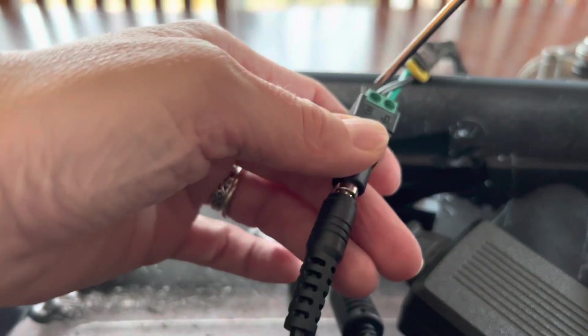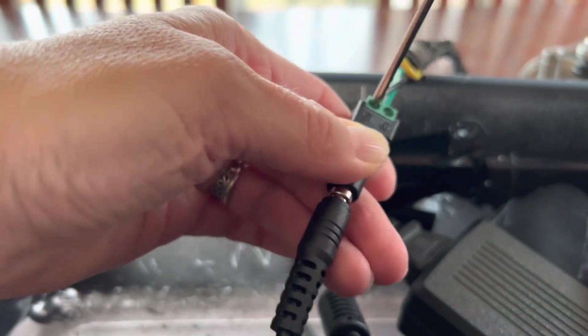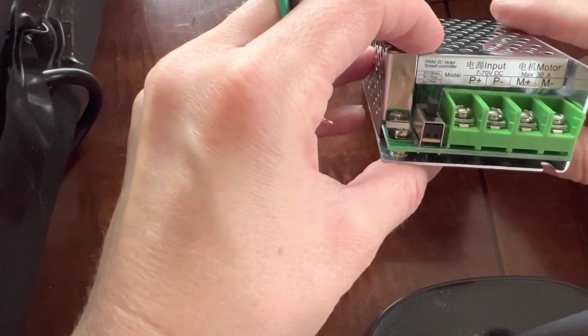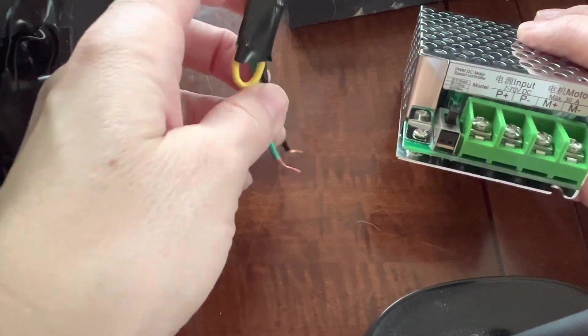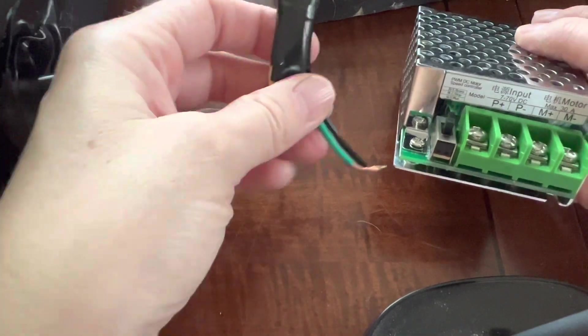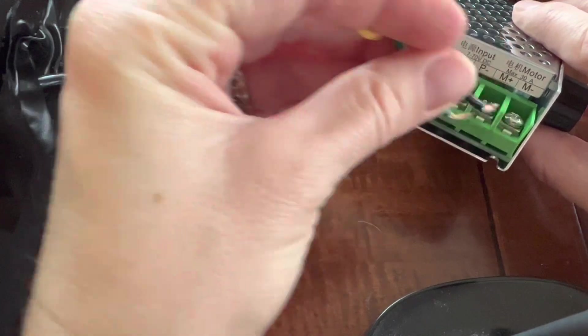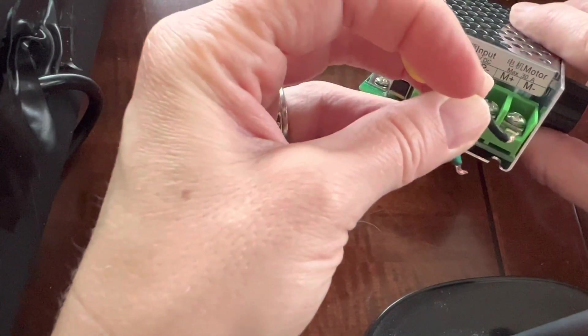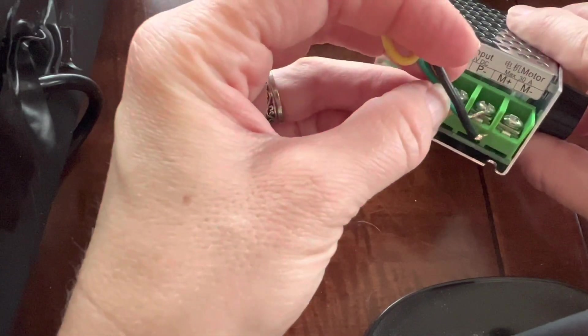So I'm going to take this off now because this is our original wiring. Now we're going to take the ground and the low speed from the wiper motor and directly put it into the M side of the controller. Ground is going to connect to M negative and the positive is going to connect to M positive.